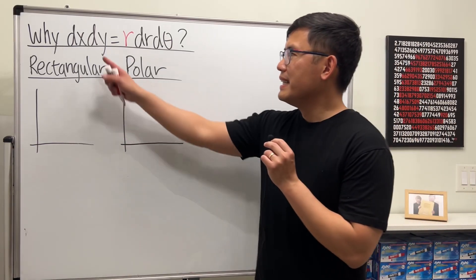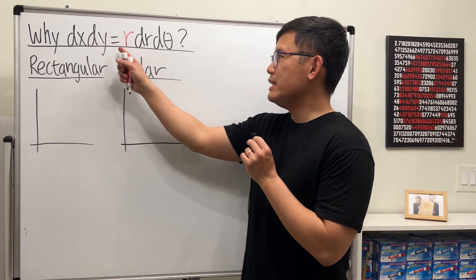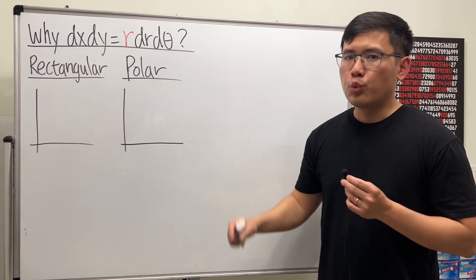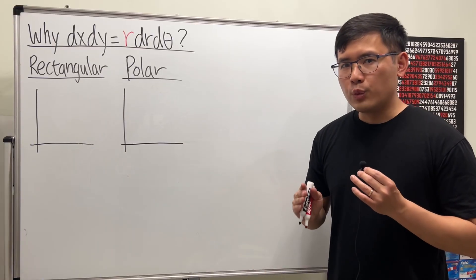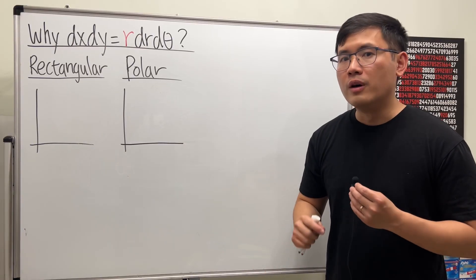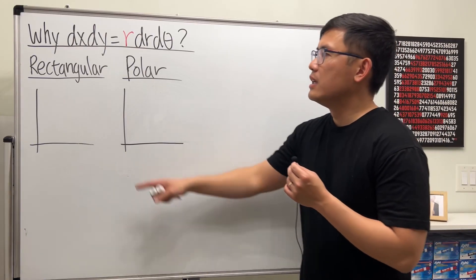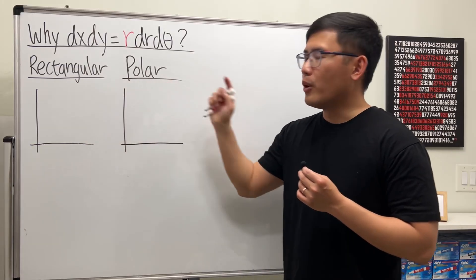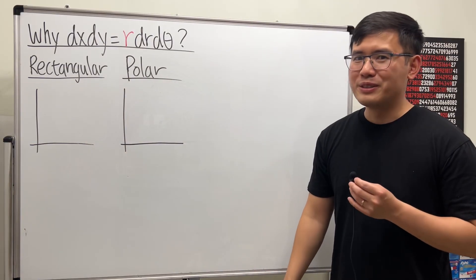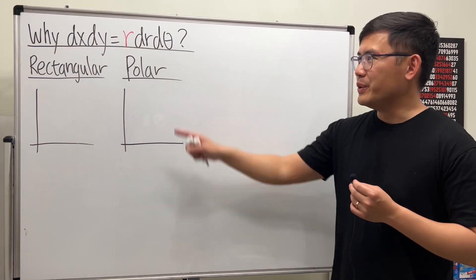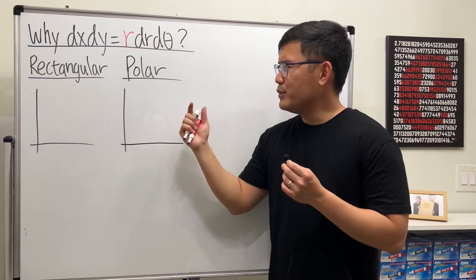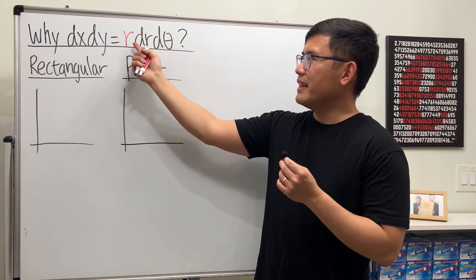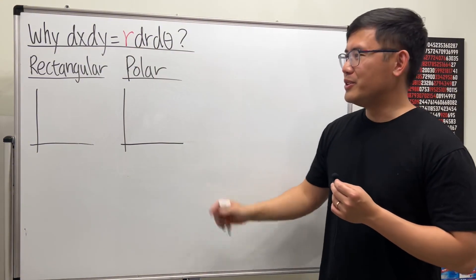Let's talk about why dx dy is equal to r dr dθ. We need this whenever we are working with a double integral that requires a change of coordinates going from rectangular to polar, just like the famous Gaussian integral. The usual question is: why is there an extra r?